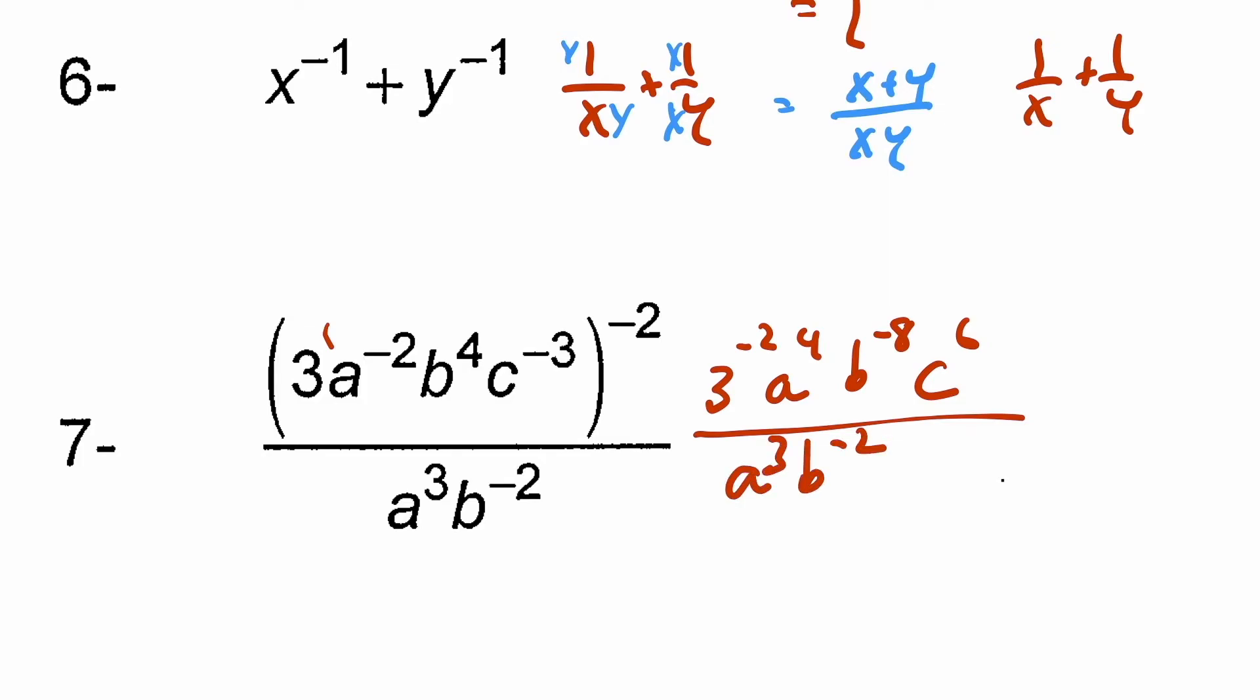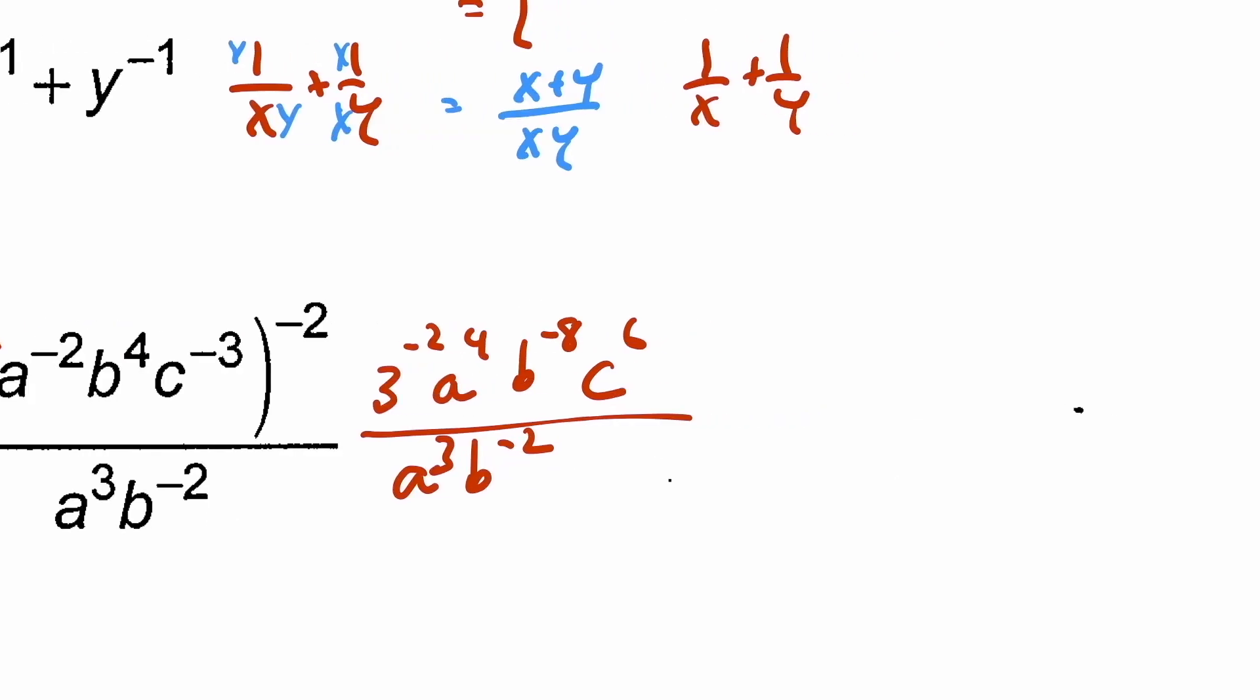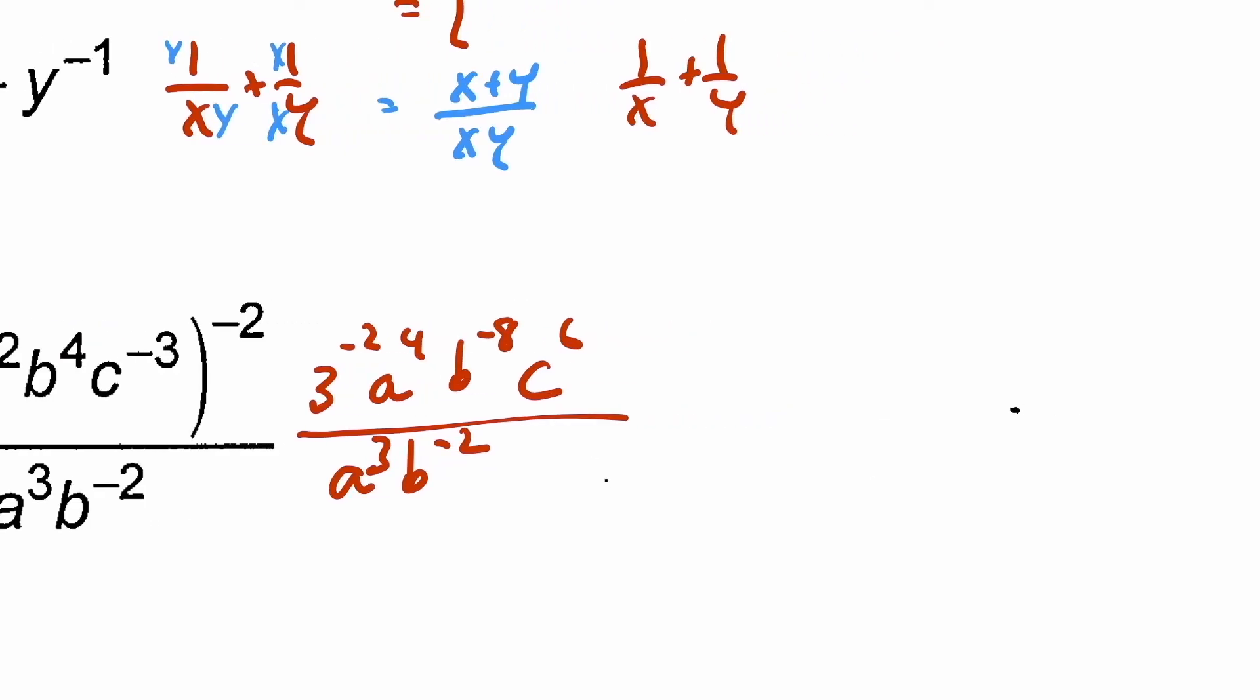So then I'm just going to, if it has a negative exponent, it's on the wrong floor. So I'm just going to fix that. So I have a to the four, b to the two. So this negative two comes up. The b to the negative two comes up, the b to the positive two. The b to the negative eight comes down. I'm going to have it down on the bottom here.